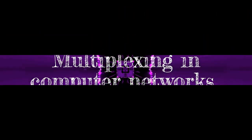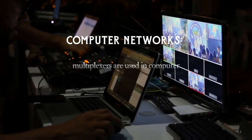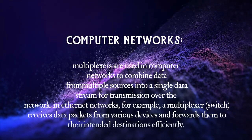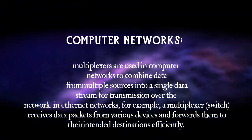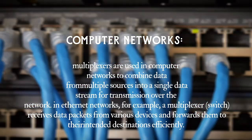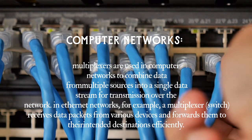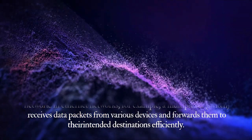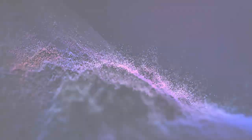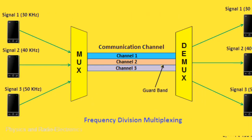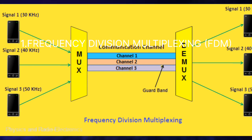Multiplexing in computer networks: multiplexers are used in computer networks to combine data from multiple sources into a single data stream for transmission over the network. In Ethernet networks, for example, a multiplexer receives data packets from various devices and forwards them to their intended destinations efficiently.